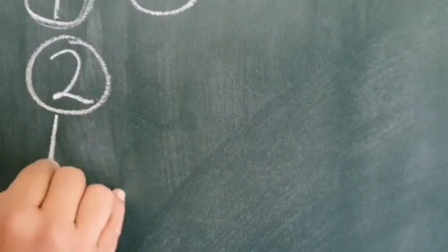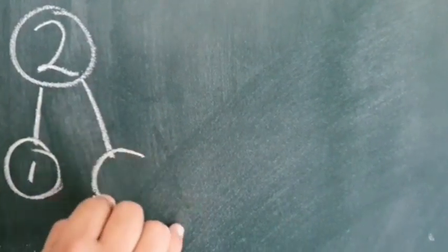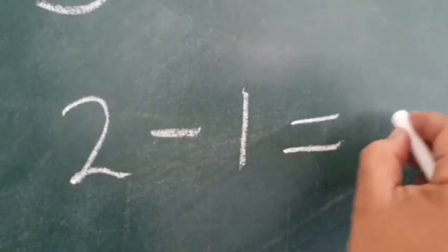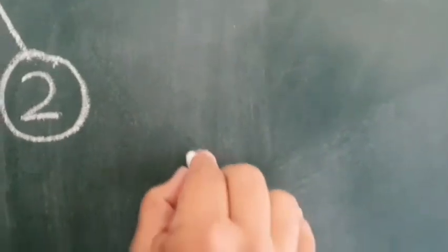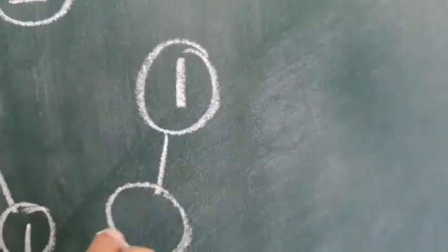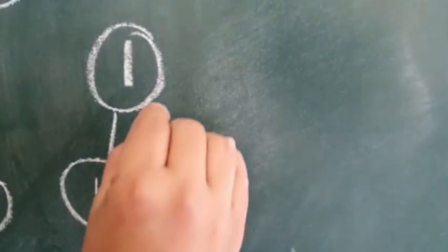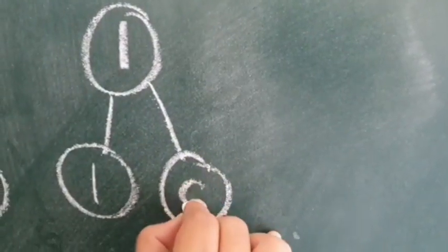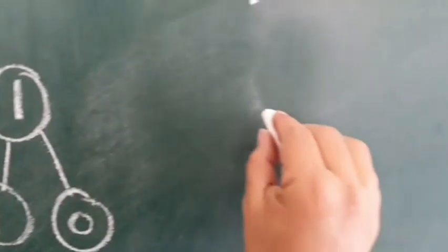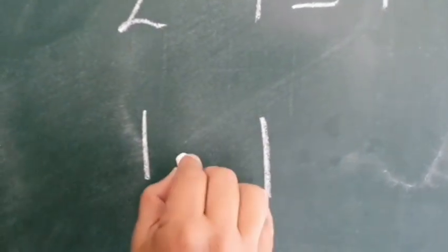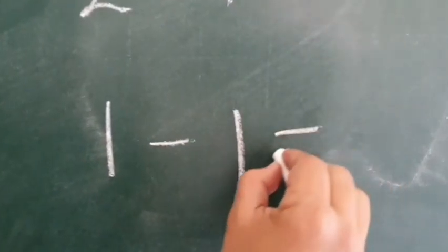There were 2 pigeons, 1 pigeon flew away and there was only 1 pigeon left behind. 2 minus 1 is equal to 1. There was 1 pigeon and that one flew away, now no pigeon left behind — that's 0. 1 pigeon, 1 flew away, 1 minus 1 is equal to 0.